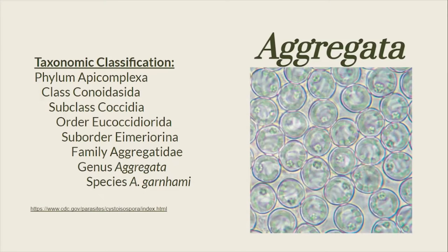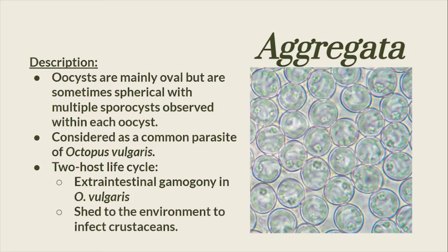Next one is Aggregata garnhami from the genus Aggregata. Their oocysts are mainly oval, sometimes spherical, with multiple sporocysts inside each oocyst. It is a common parasite of the common octopus and has a two-host life cycle.